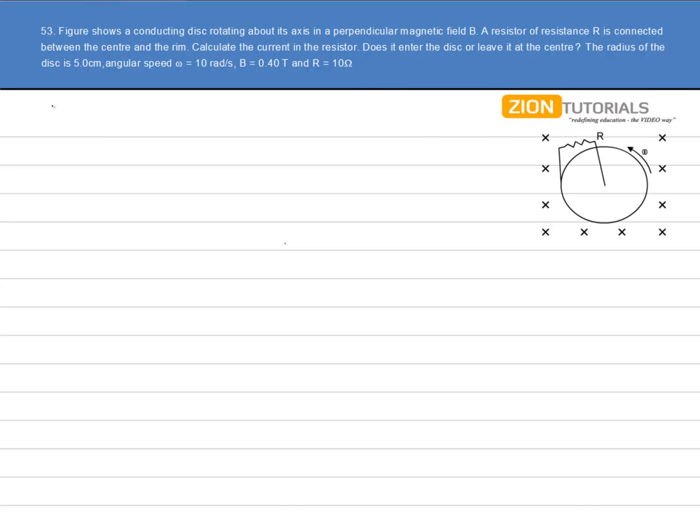I have some of the data: the radius of the disk is 5 cm or 0.05 meter, omega is given as 10 radian per second, resistance is 10 ohm, and magnetic field is 0.4 tesla.